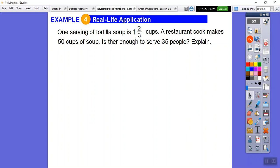So to figure out how many servings there are, we're going to divide. 50 cups divided by how many can we do? And we divide it by 1 and 2 thirds. So to find the number of available servings, we divide 50 by 1 and 2 thirds.